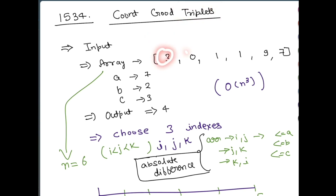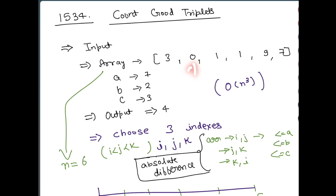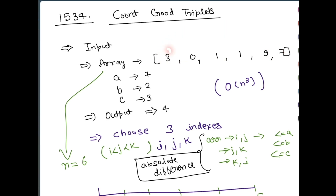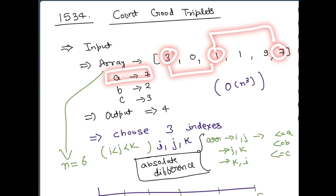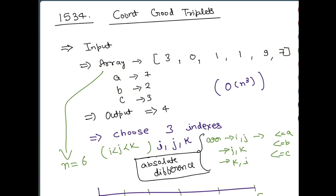Basically, three numbers can be called a triplet. You can choose any three numbers out of your array — for example, you can choose 0, 1, 1 or you can choose 3, 0, and 9. They don't need to be continuous; you just need to choose any three numbers and they form a triplet. Now they will be called a good triplet when the difference in the first two numbers is less than or equal to a, the difference in the next two numbers is less than or equal to b, and the difference between the first and the third number is less than or equal to c. Mathematically, you need to choose three indexes out of your array.